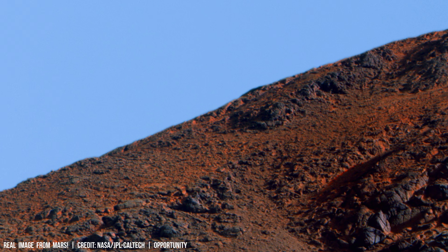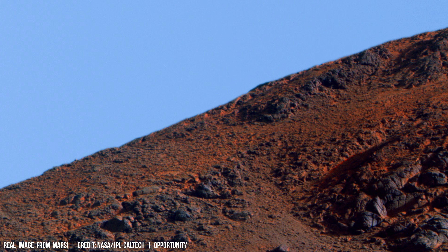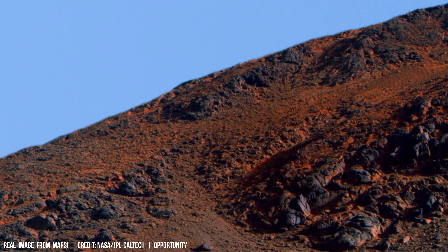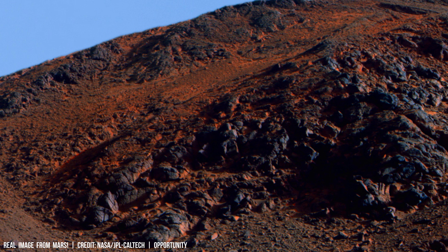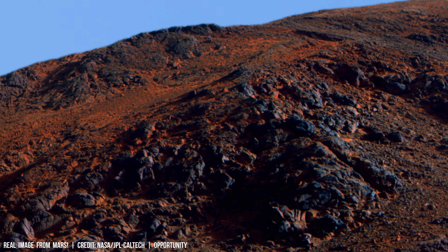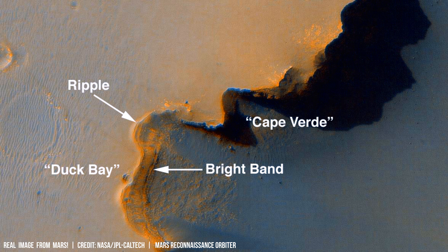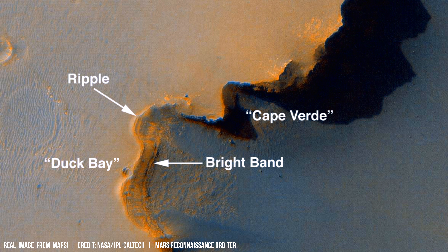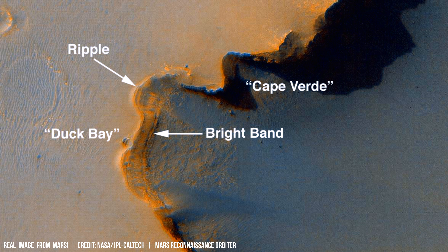Recent advancements in remote sensing technology have allowed scientists to observe the Martian surface with unprecedented detail. Satellites orbiting Mars can capture high-resolution images of the ice cap surface, revealing patterns and textures indicative of geological processes such as sublimation and deposition.